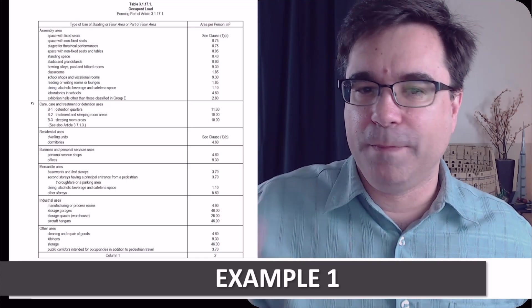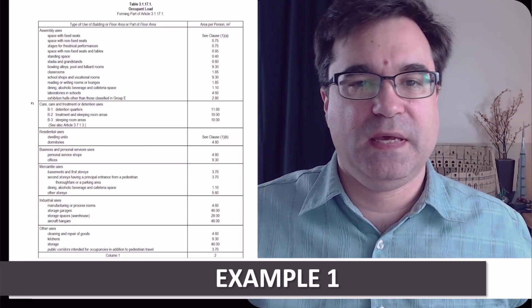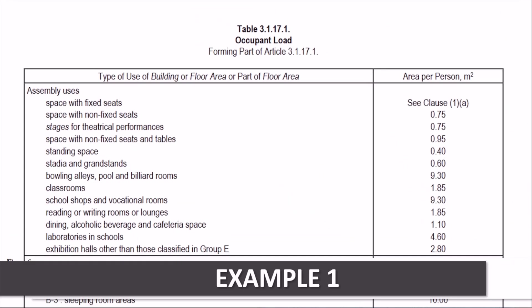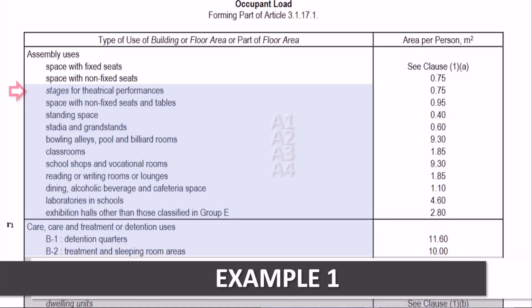Do you see how all major occupancies are listed right here? In order, it shows assembly occupancies here. These are the ones identified as A1, A2, A3, and A4.